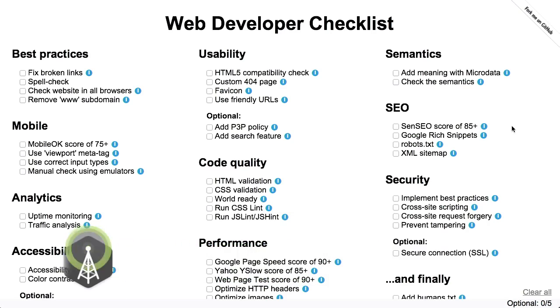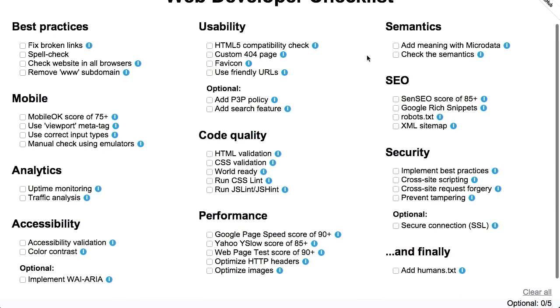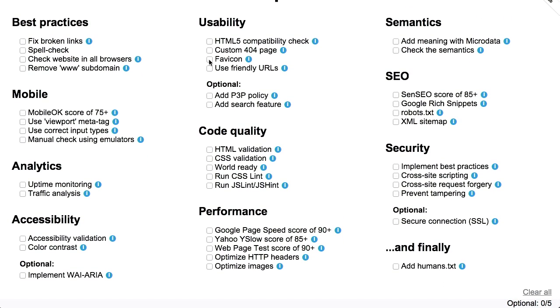Next up is the web developer checklist, which is just a web page with a whole bunch of checkboxes to make sure that you're doing all the right stuff before you launch your next web project. There's best practices as a general category, but then there's all the little things that you might forget about like favicons or traffic analysis with Google Analytics. There are also categories for SEO, security, code quality, accessibility, and finally, addhumans.txt.